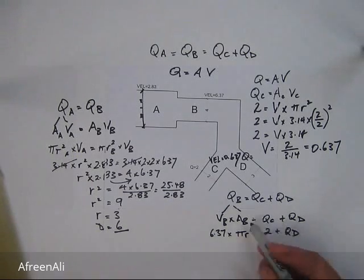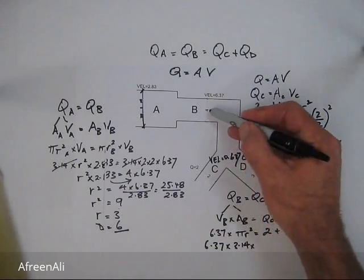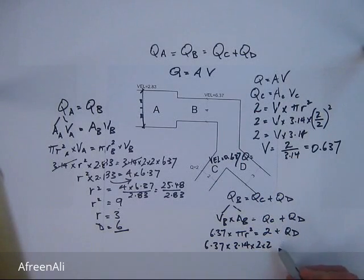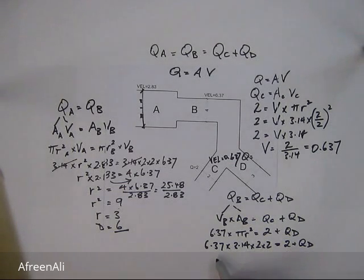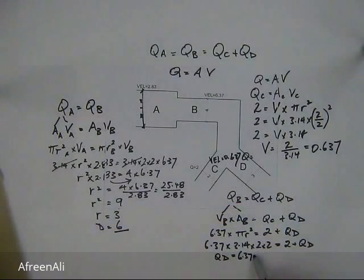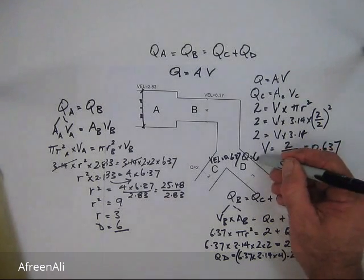Substituting pi as 3.14 and the radius at B as 2 (since diameter is 4), we get 3.14 times 2 squared times 6.37 equals 2 plus the flow rate at D. Transposing the 2 to the other side, the flow rate at D equals 6.37 times 3.14 times 4 minus 2, which equals 6. So the flow rate at D equals 6.